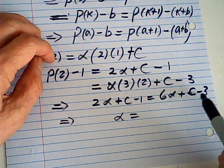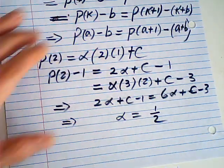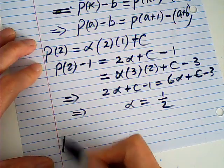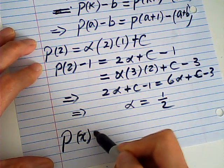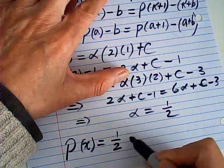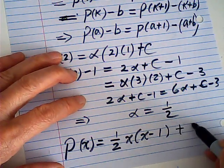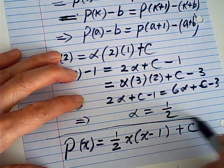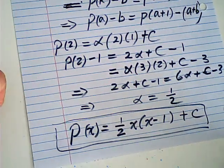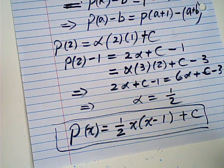So my polynomial I suggest is 1/2 · x(x-1) plus C. So this claim is my solution. I just need to be verified.